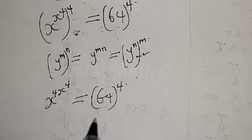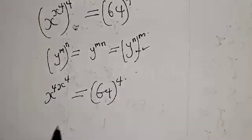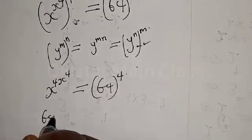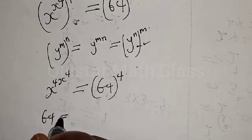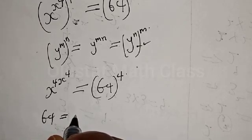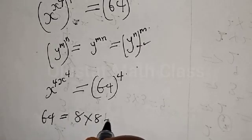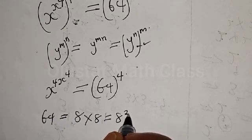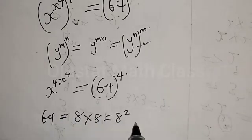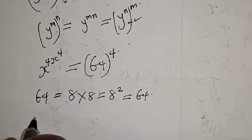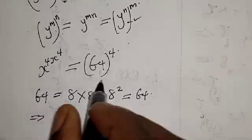Now let's consider the right-hand side, that is 64 raised to power 4. We know that 64 can be expressed as 8 times 8, which is equal to 8 squared, since 8 squared equals 64.